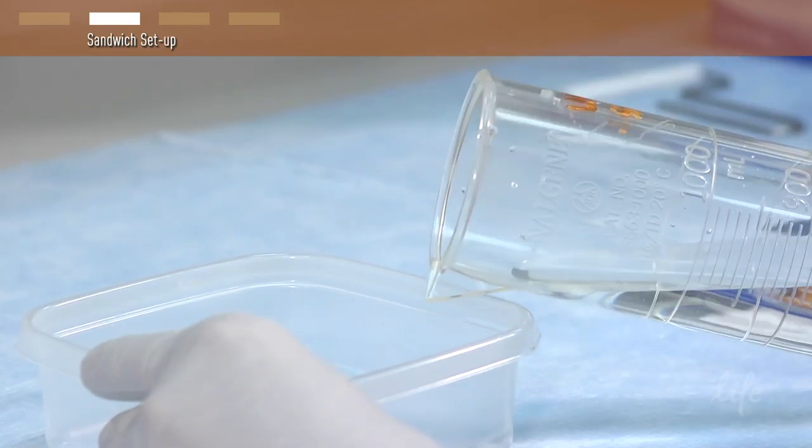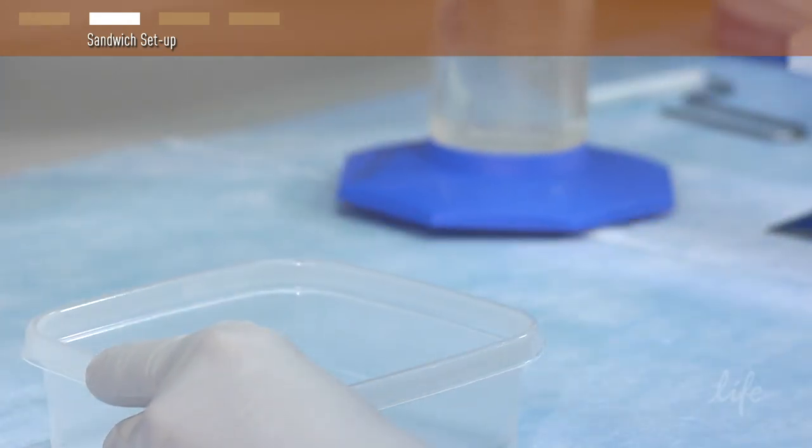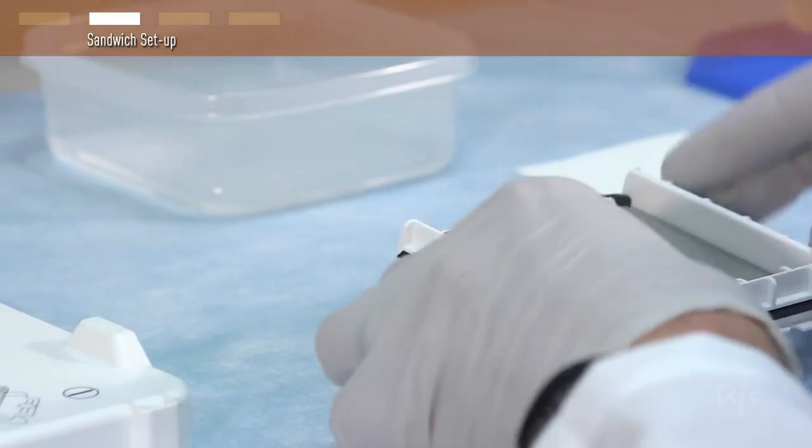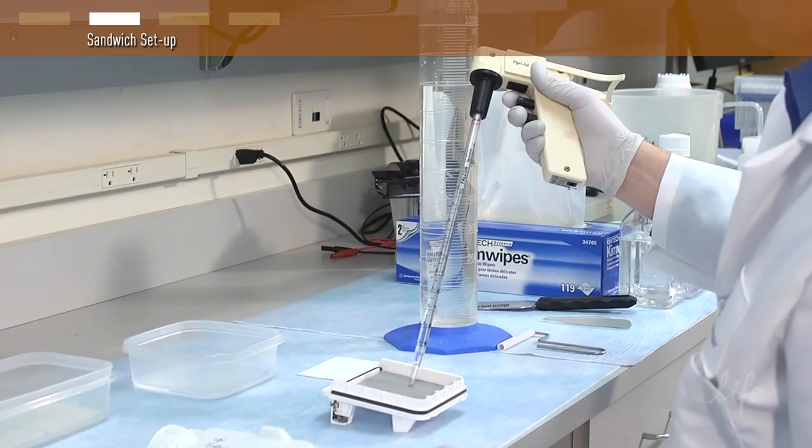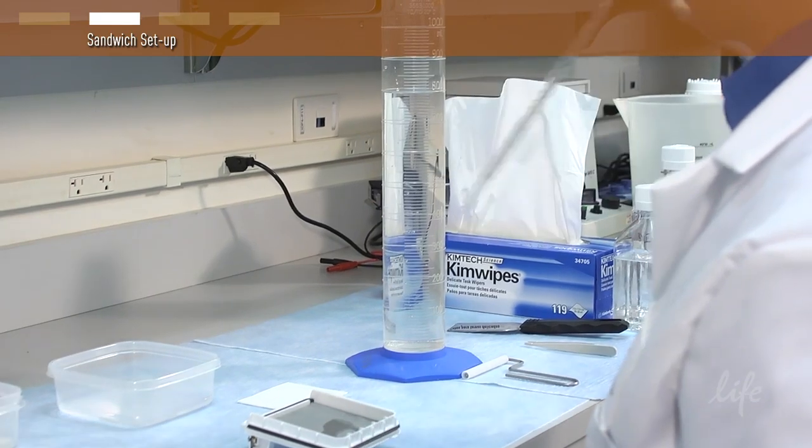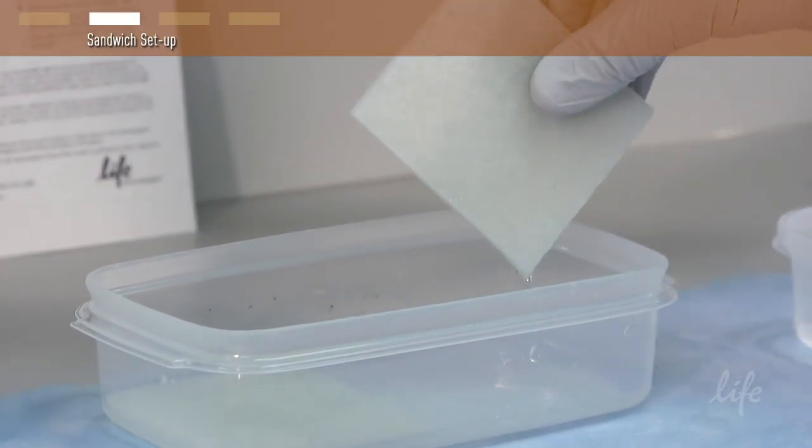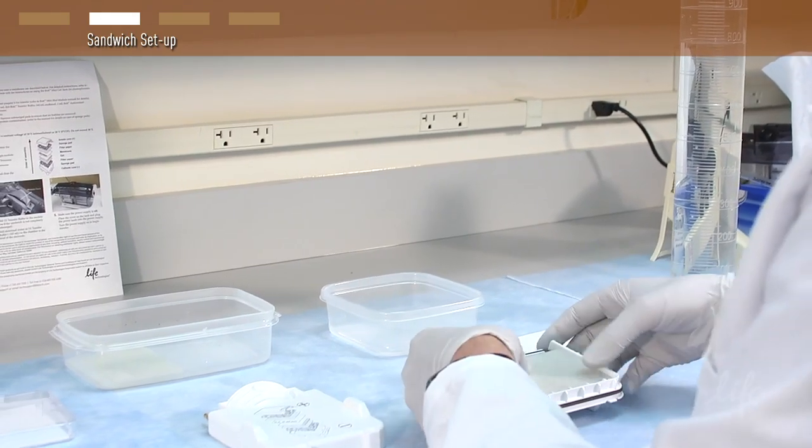Place a shallow dish on the bench and pour 1x transfer buffer to dip filter papers during sandwich assembly. Assemble the Western transfer sandwich by placing the cathode or negative core on a flat surface. Pour 5 milliliters of 1x transfer buffer into the core. Then place a pre-soaked sponge pad on the cathode core followed by a pre-wetted filter paper.